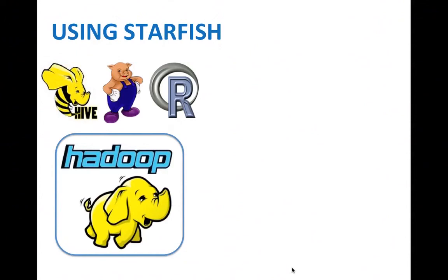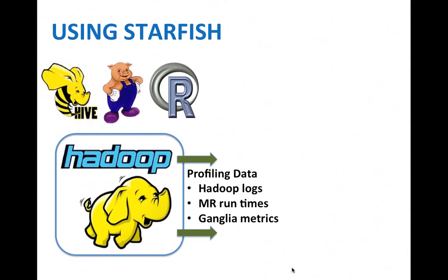Using Starfish is easy — it consists of three steps. The first step is to collect profiling data from your Hadoop cluster. Starfish supports different forms of profiling data, such as the job history logs that are always collected by Hadoop, MapReduce runtimes, resource usage, and similar metrics from Ganglia.